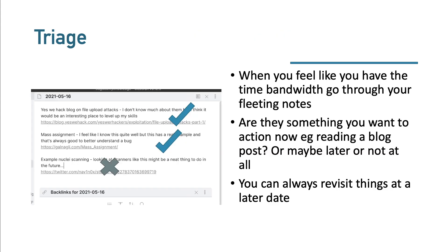Across a day you have a daily note and you end up collecting a few of these. Then it's triage time. When you have the time and bandwidth, go through those notes and decide: is this something you want to action now, like reading a blog article on your lunch break? Something to read later in the evening? Or maybe not at all — maybe an article about mass assignment is interesting, but something like Nuclei might just lead to duplicates.